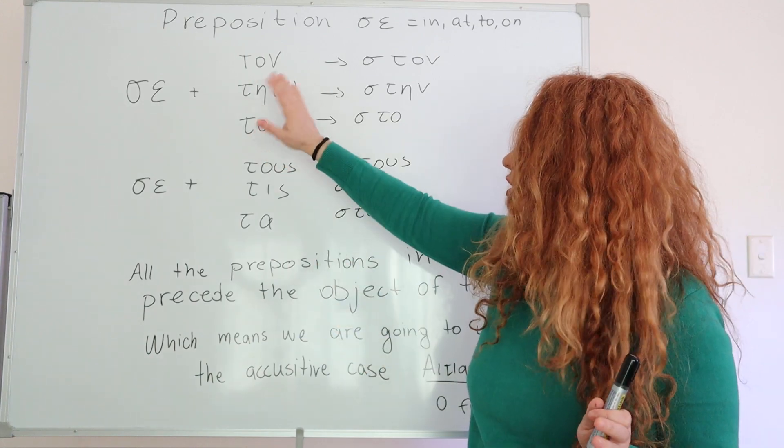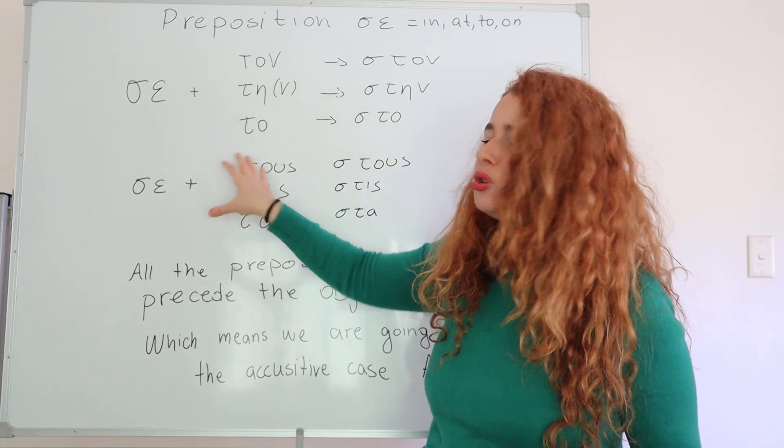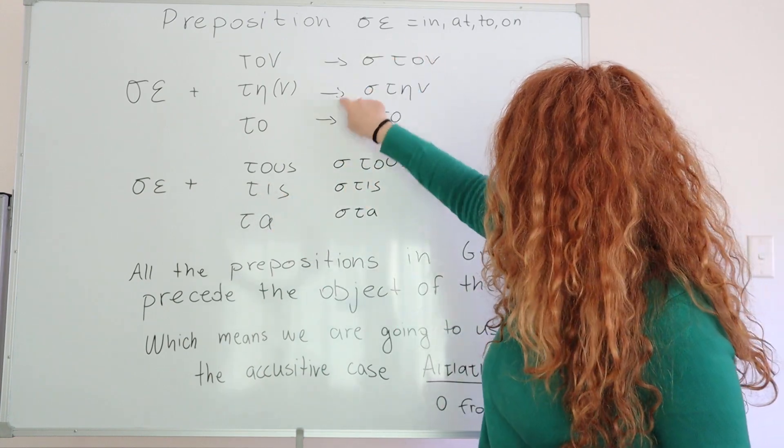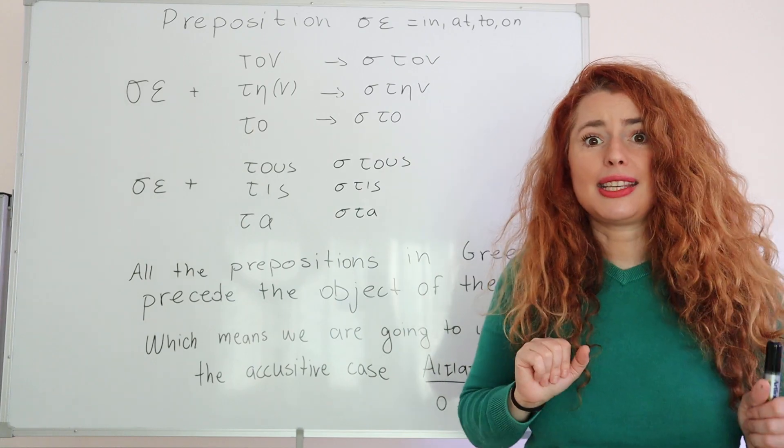We don't really use SE TONE, SE TIN or SE TA. We don't really use the two words. We always use this part. STONE, STIN, STO, STUS, STIS, STA. Let's see a couple of examples.